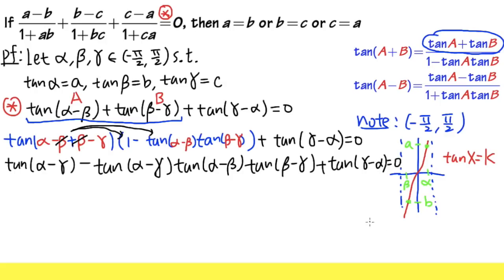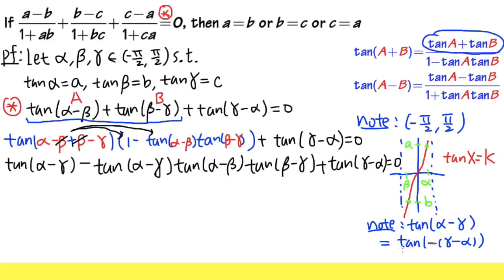We notice that tangent(alpha minus gamma) and tangent(gamma minus alpha) are related. We can factor out a negative inside: tangent(alpha minus gamma) equals tangent of negative(gamma minus alpha), and since tangent is an odd function, this equals negative tangent(gamma minus alpha). So these two terms legitimately cancel each other out.